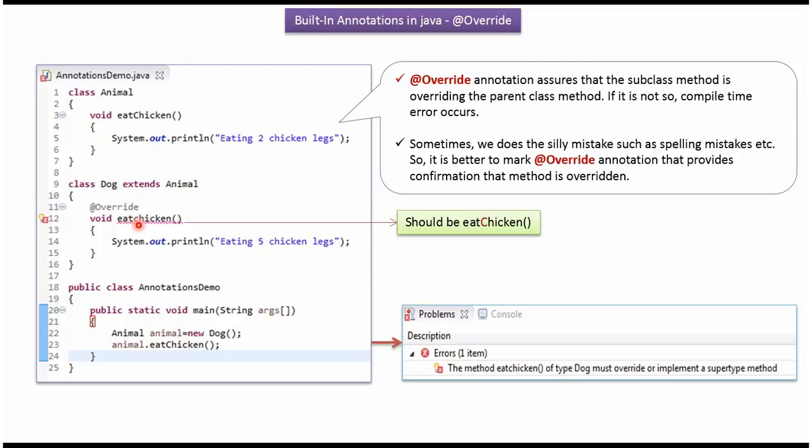Here I made a small mistake. Instead of capital C, here I put small c. So it is not overriding the parent class method. So we will get a compile time error, like this.